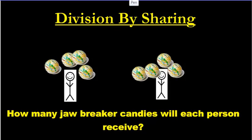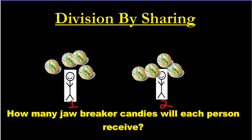How do we write that as a division equation? The rule is the first number you write has to be how many you had all together. How many jawbreakers did we have all together before we started? We had 8, so we write 8. Then we divided them among 2 people, so we write 2. We had 2 groups. And the answer is 4 because everybody gets 4.